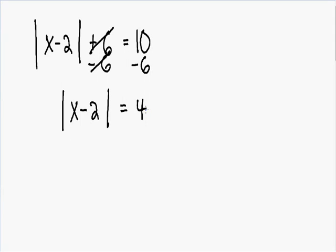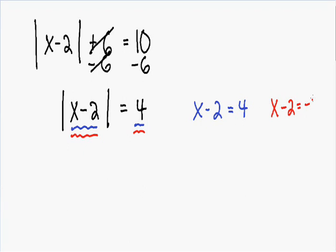Moving on to our next step, we need to take the inside of our absolute value, x minus 2, and make it equal to 4. So x minus 2 is equal to 4. We also need to take the inside of the absolute value, x minus 2, and make it equal to the negative value of this number, negative 4. So x minus 2 is going to be equal to negative 4.